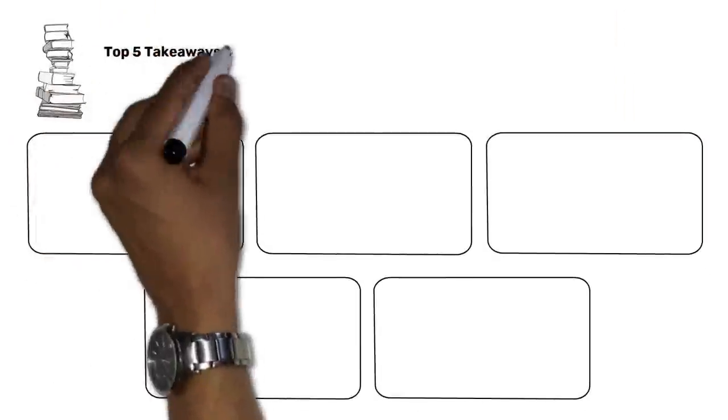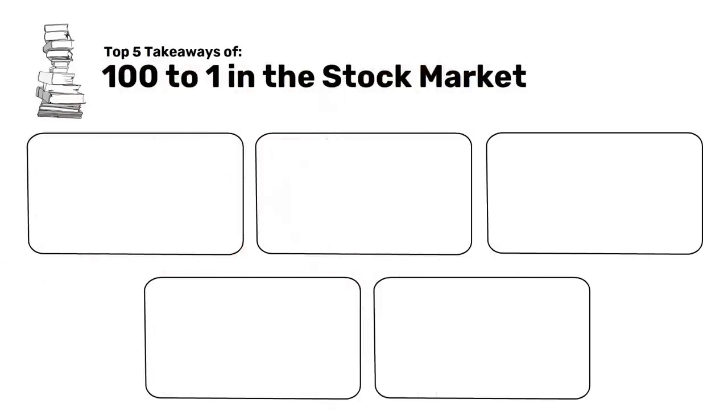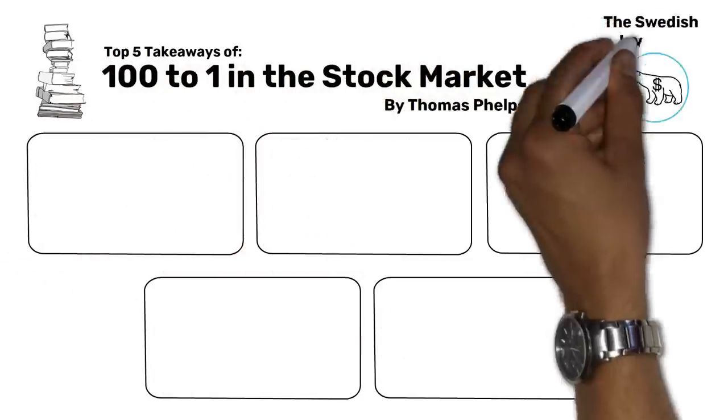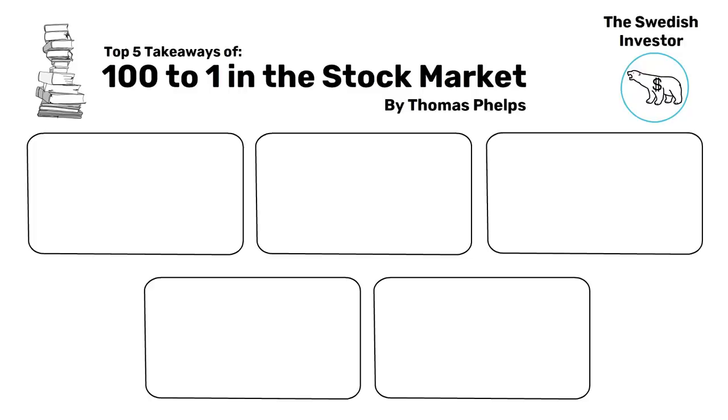This is a top 5 takeaway summary of 100 to 1 in the stock market, written by Thomas Phelps. And this is The Swedish Investor, bringing you the best tips and tools for reaching financial freedom, through stock market investing.